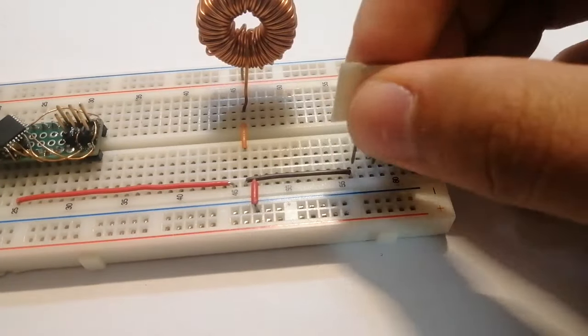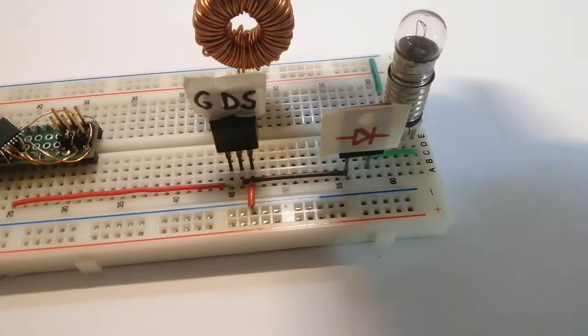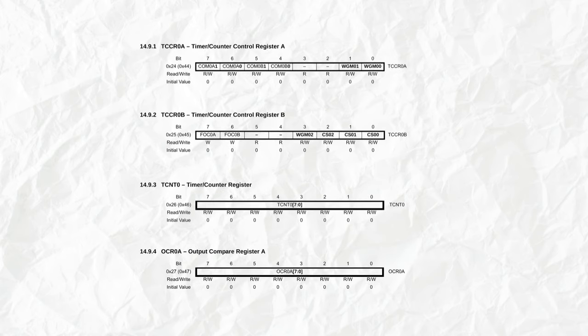So in this video I'll use the timer counter zero to generate the necessary PWM to drive a switch mode power supply. And yes I'll still be using my Frankenstein dual inline package microcontroller. There are just a few registers for this timer and I won't bore you with them now because I'll just explain how to use them during the tutorial.